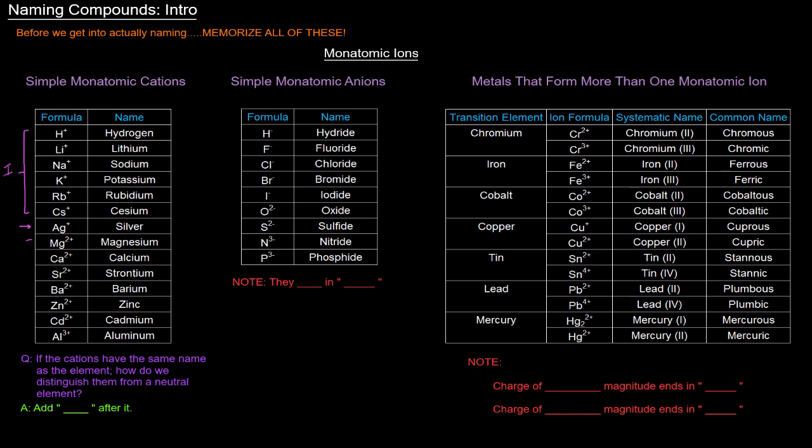Then we've got Mg all the way to Ba2+, those are the group 2A elements. And we already know that they form plus two charges because they have to lose two electrons to reach a noble gas configuration. In addition to them, zinc and cadmium both form plus two ions. And then we've got aluminum, a group 3A element, that forms a plus three ion.